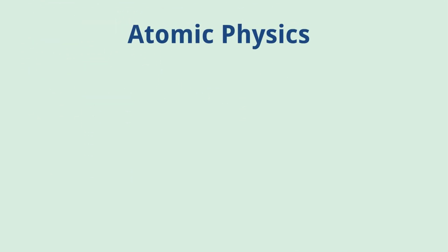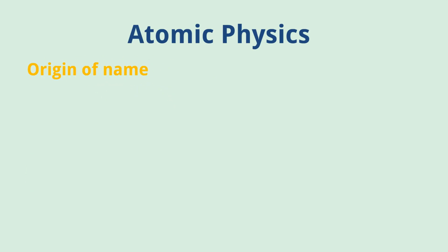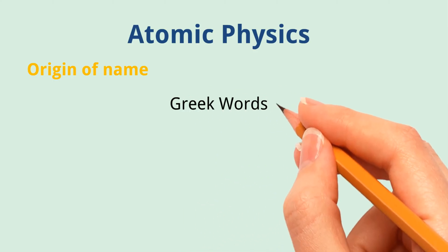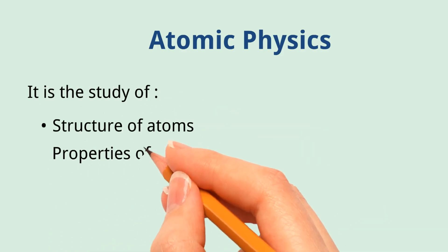Atomic physics. Origin of name: It is derived from two Greek words, 'atomos', meaning indivisible particle, and 'physica', meaning the natural things. It is the study of the structure of atoms and properties of atoms.